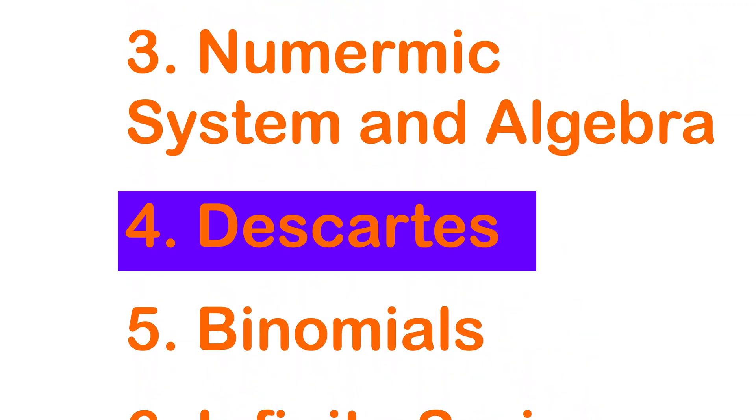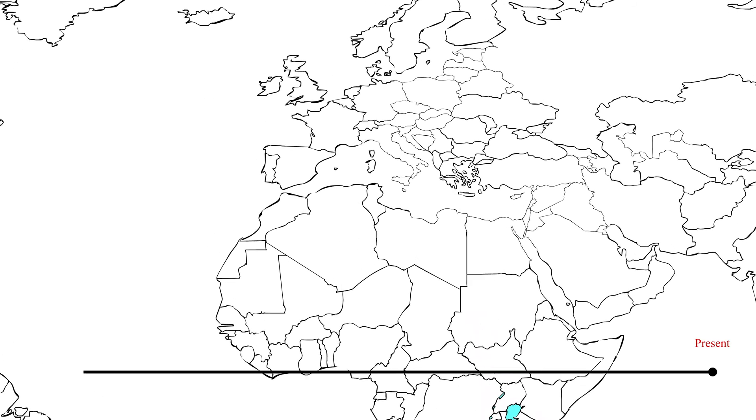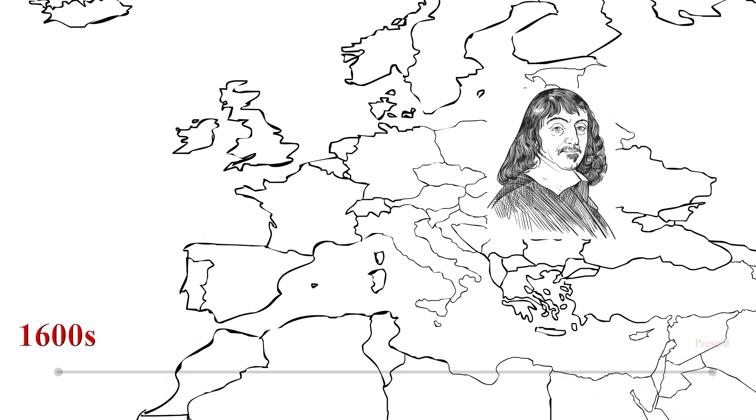In this lesson we cover the Cartesian coordinate system. Around the 1600s, Rene Descartes published his work introducing analytical geometry.